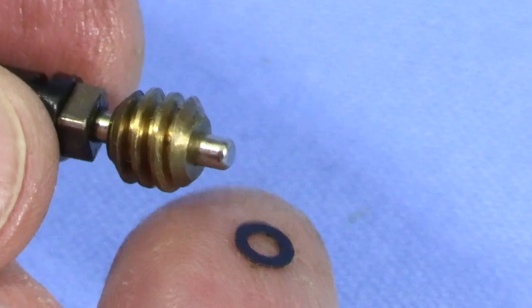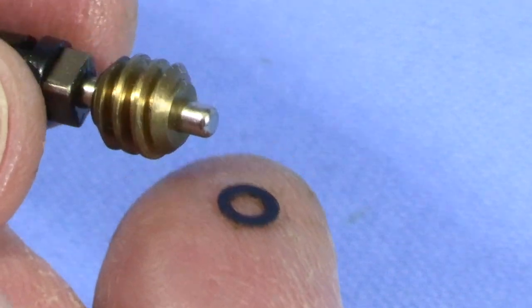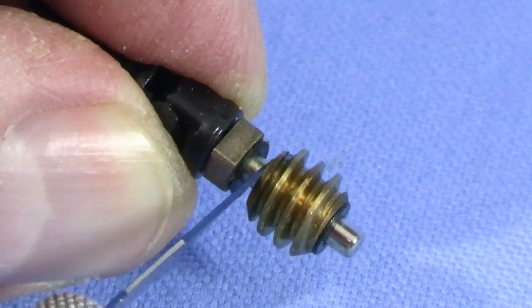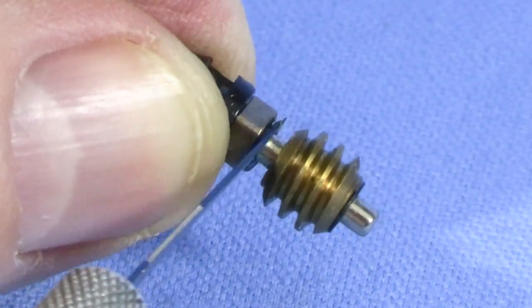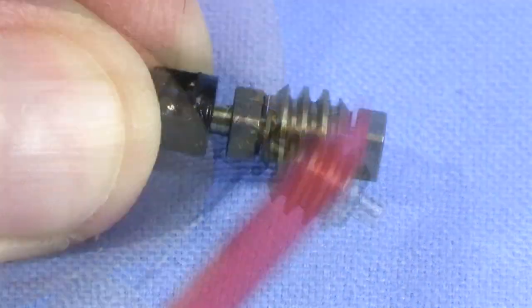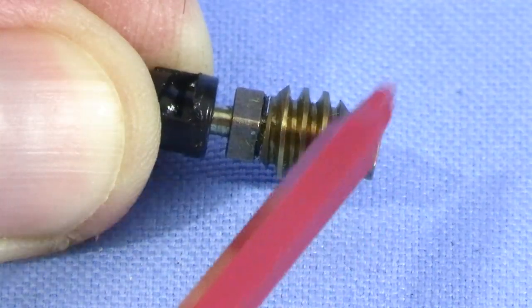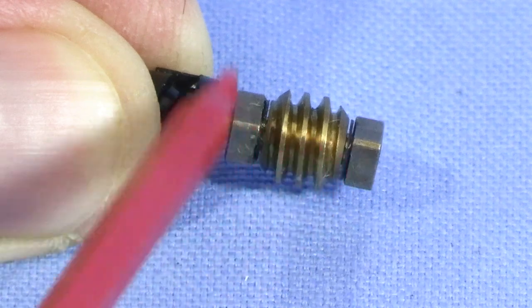I'll also remove the thrust washer behind the front bearing and clean it. Be careful not to lose it. The rear thrust washer is a little more difficult since it has to be cleaned in place. A hobby knife can work as a scraper. After working at it with a microbrush and alcohol for a few minutes, the bearings spin again.